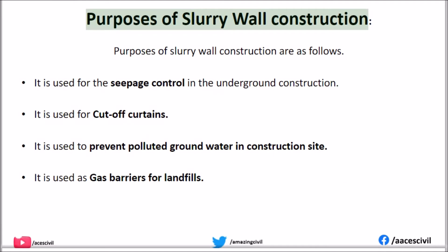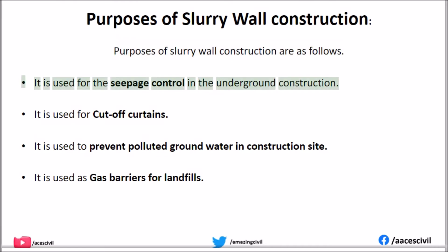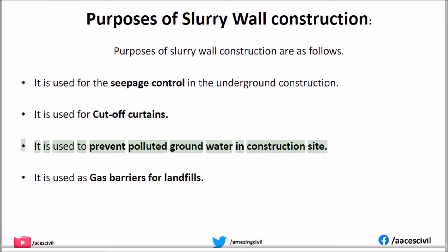Purposes of slurry wall construction are as follows: It is used for seepage control in underground construction. It is used for cut-off curtains. It is used to prevent polluted groundwater at construction sites. It is also used as gas barriers for landfills.